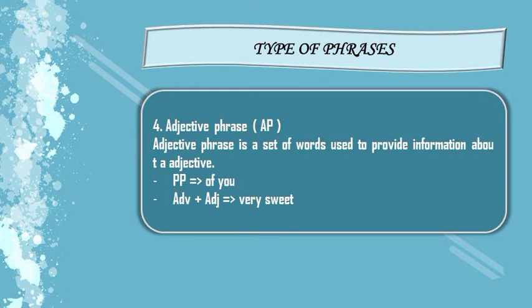The next is adjective phrase, usually called AP. An adjective phrase is a set of words used to provide information about an adjective. The keywords of adjective phrase are: a prepositional phrase — for example, 'of you'; and adverb plus adjective — for example, 'very sweet,' where 'very' is adverb and 'sweet' is adjective.